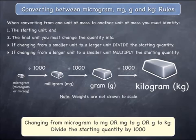In these last three examples, a quantity has been changed from a smaller unit into a larger unit. The information in the yellow box summarises the rule that was applied.